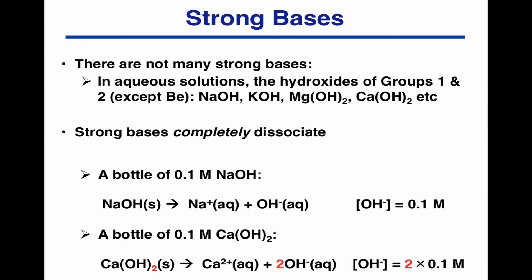Just be a little bit careful. Remember that we can have different stoichiometries. A bottle of 0.1 molar calcium hydroxide, because calcium hydroxide has two hydroxides for every calcium, when 0.1 molar calcium hydroxide solution dissolves, we get two OH minuses. So if it's 0.1 molar calcium hydroxide, the OH minus concentration is 0.2 molar.